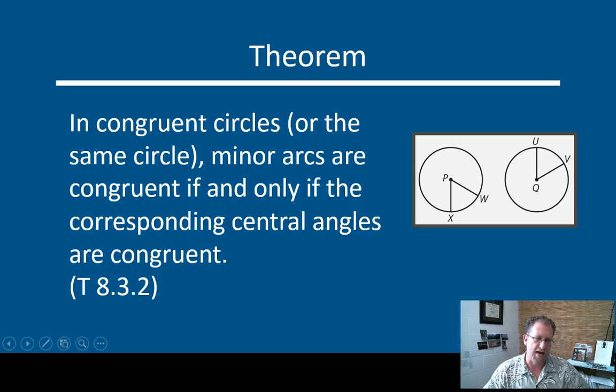So BJU takes that idea and expresses it as a theorem. In congruent circles or on the same circle, minor arcs are congruent if and only if the corresponding central angles are congruent. So congruent circles or the same circle. The minor arcs are congruent only if the central angles are congruent, and it's written as a biconditional, so if and only if. That means that if the central angles are congruent, you have congruent arcs. If you have congruent arcs, you have congruent central angles. So whichever way you want to use this, you can use it forwards or back.